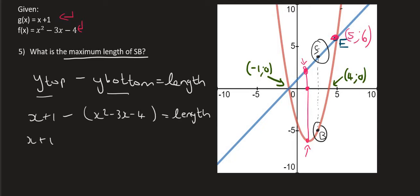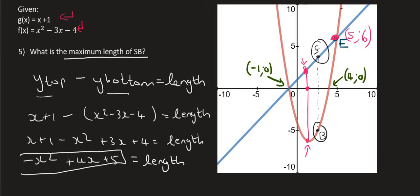We can then simplify. So I'm going to multiply the minus into the bracket. And you can call it distance, you can call it SB length, whatever you like. I'm then going to simplify. So that's minus x squared plus 4x plus 5. And that's going to give me the length. So the length is presented by this equation over here.